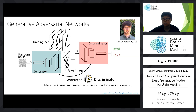These two networks fight against each other. In game theory, it is called a min-max game. Each party tries to minimize their own losses given that their opponent is perfect. For example, if I'm the discriminator, I'm assuming I'm facing a perfect generator which can generate realistic images to fool me. Thus, I'm trying to minimize the number of mistakes I make in misclassifying fake images as real images.